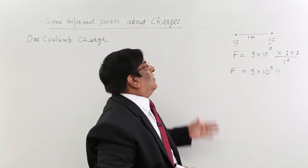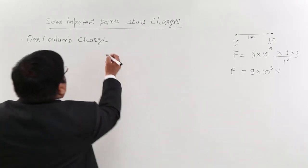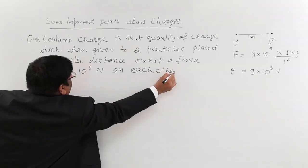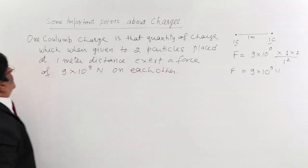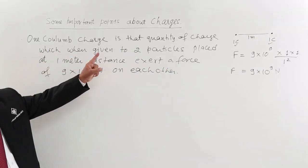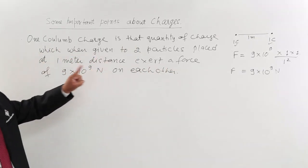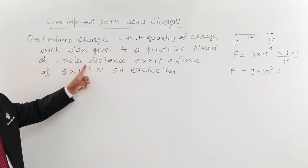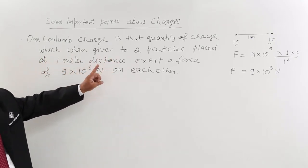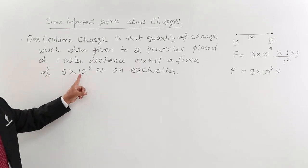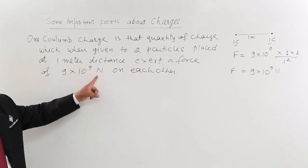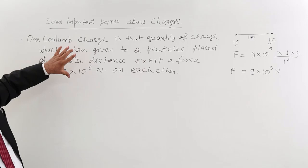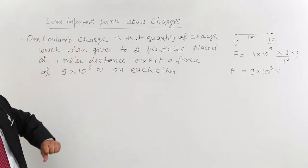So now writing it in words: 1 coulomb charge is that quantity of charge which, when given to two particles placed at 1 meter distance, causes them to exert a force of 9 × 10⁹ Newton on each other. This gives us an idea of what 1 coulomb charge is.